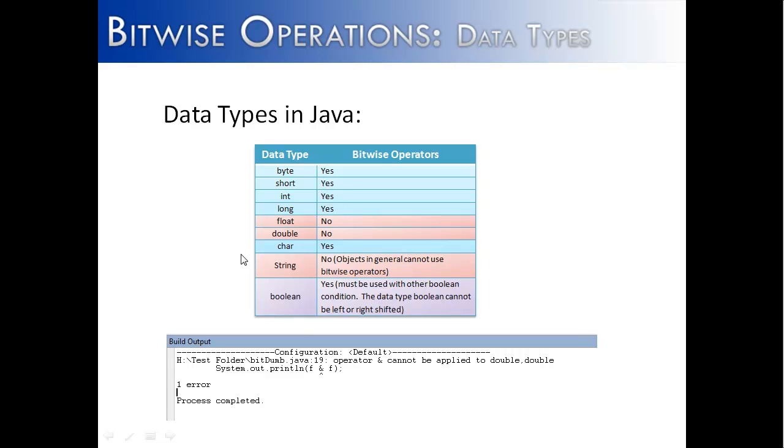All integers, characters—float, double, are off-limit, string, off-limit, and Boolean in some cases. Thank you.